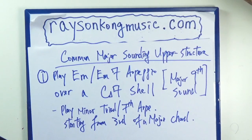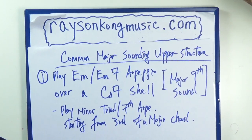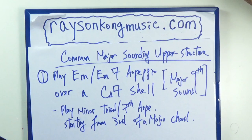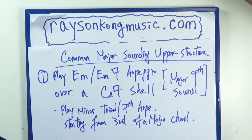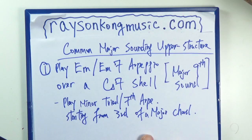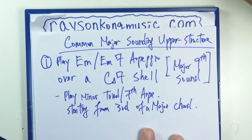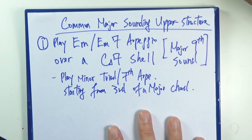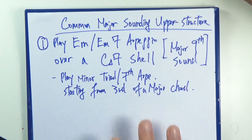Hello everybody. We'll look at some common major sounding upper structure chords. In the last videos we pretty much explored all the possibilities of upper structure triads and also seventh chords — there should be six for each type: six major triads and six upper structure seventh chords. Luckily, some of these are more commonly used than others and we will take a look at these.